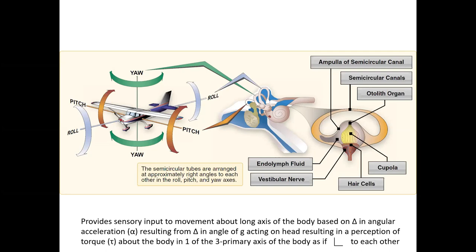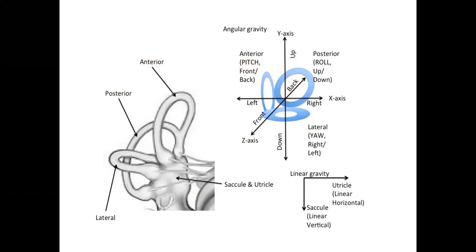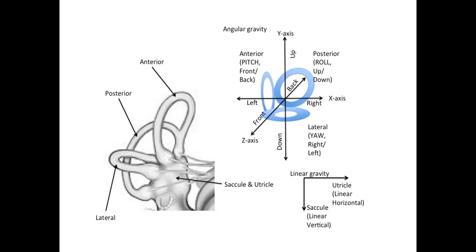Each one of the semicircular canals picks up a distinct sense of motion. The anterior canal picks up the sense of pitch — forward and back angular rotation. The posterior canal gets the sense of roll — side to side angular rotation. The lateral canal gets the sense of yaw — rotation right to left. The saccule and utricle give the sense of linear motion — what is horizontal and vertical position in space.